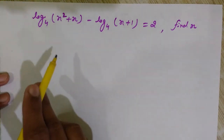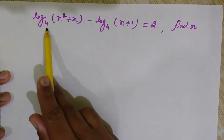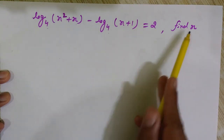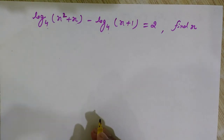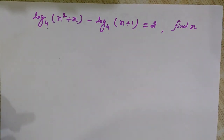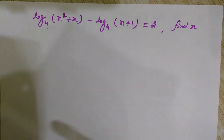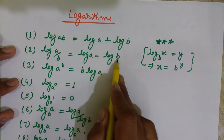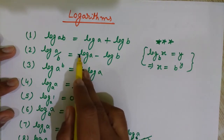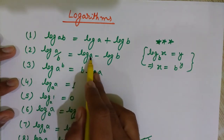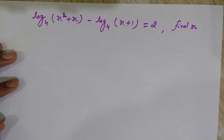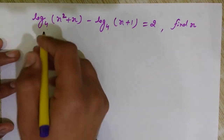Now let's discuss another problem: log of (x squared plus x) to the base 4 minus log of (x plus 1) to the base 4 is equal to 2. I want to find the value of x. We will use the property that log of a minus log of b equals log of a by b — the reverse of the quotient rule.